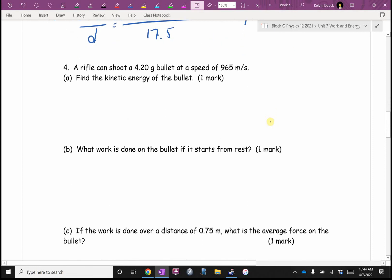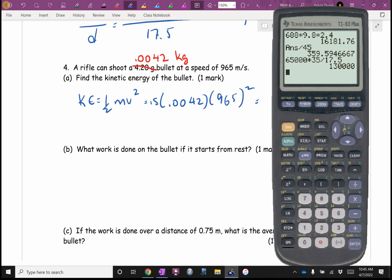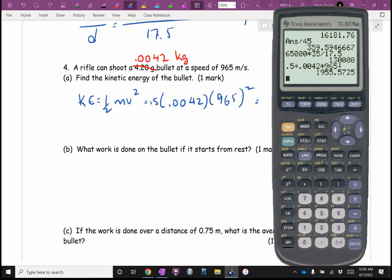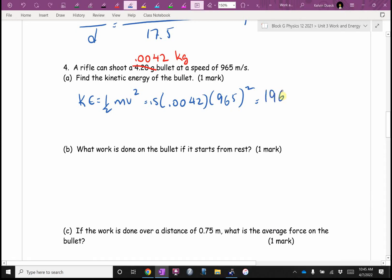A rifle can shoot a 4.2 gram bullet. Nice try. 0.0042 kilograms. Find the kinetic energy of the bullet. The kinetic energy is equal to a half mv squared. It's going to be 0.5 times 0.0042 times 965 squared. I get 1,955.57. I'll call it 1,960, but I'll store this on my calculator.